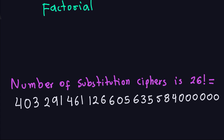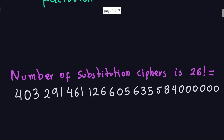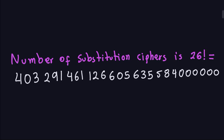This is of course a lot bigger than the number of Caesar ciphers, which for a 26-letter alphabet is just 26. The comparison shows how absolutely huge this number is — a really, really big key space for the substitution cipher. Just to give you an idea of how big this number is...